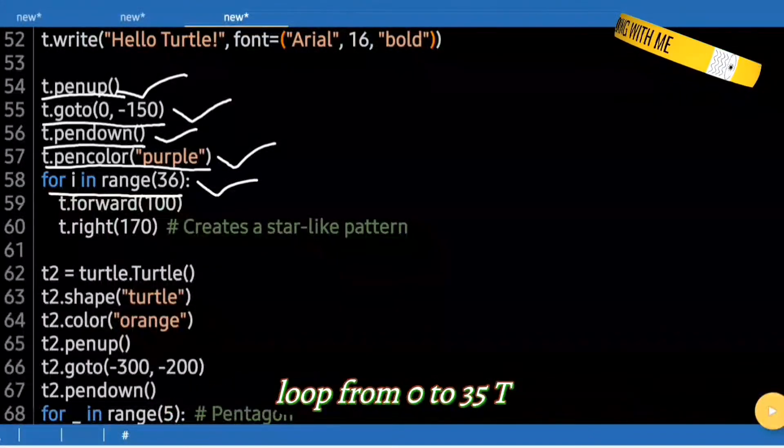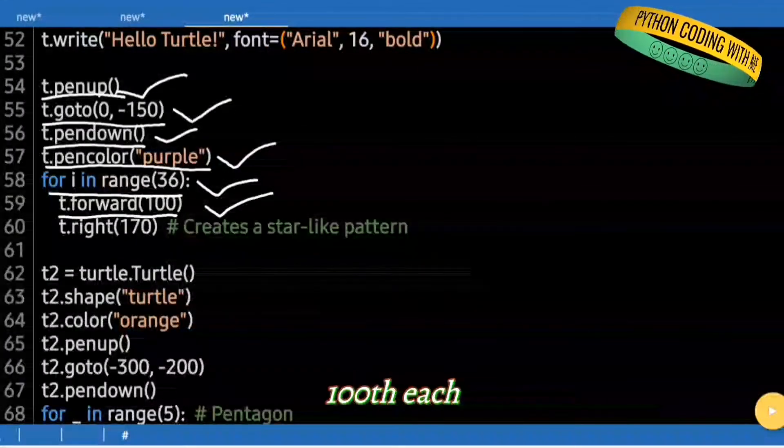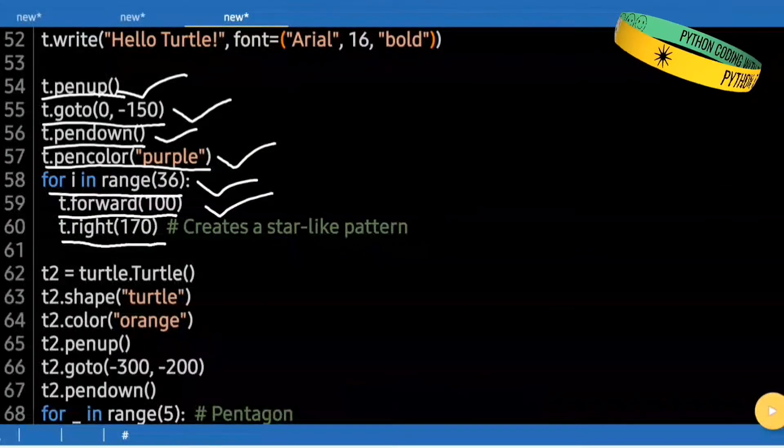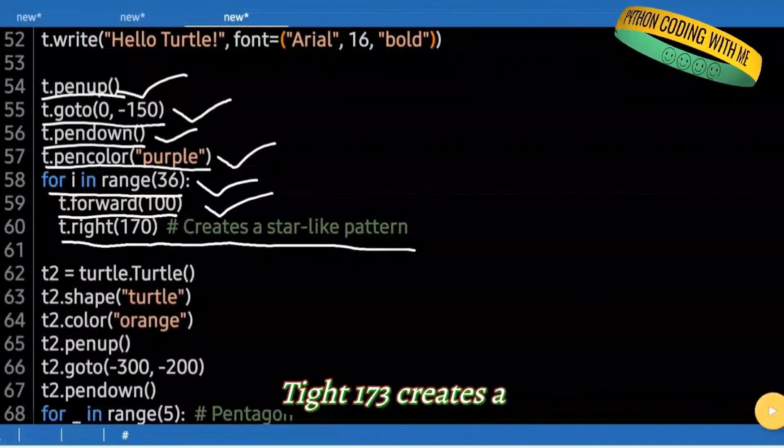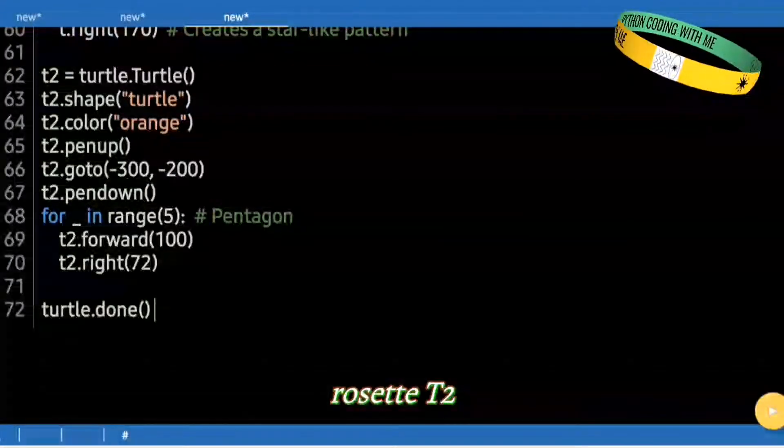We draw a 36 step pattern. A loop from 0 to 35. t.forward(100). Each step, move forward 100. t.right(170). Creates a star like pattern. Turn right 170 degrees. This creates a star like rosette.